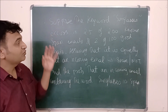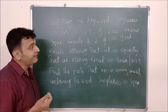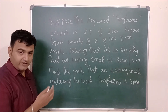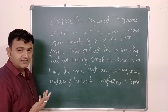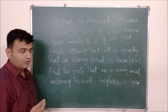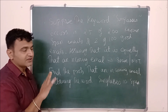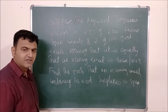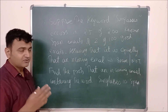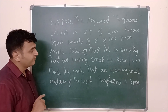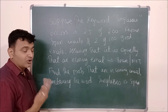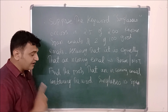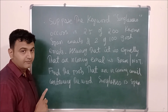Let's look at the first example. Suppose the keyword 'sunglasses' occurs in 25 of 200 known spam emails and 2 of 100 good emails. So if 200 spam emails arrive, the word appears in 25 of them. It appears in 2 of 100 good emails because someone might genuinely compliment your sunglasses. Assume spam and non-spam emails are equally likely to occur.